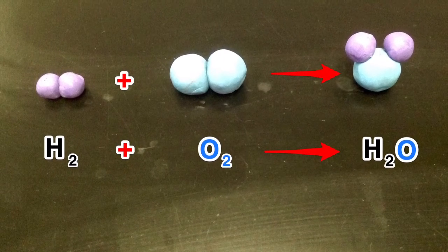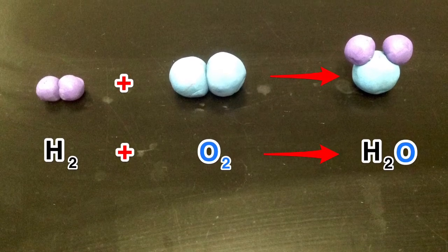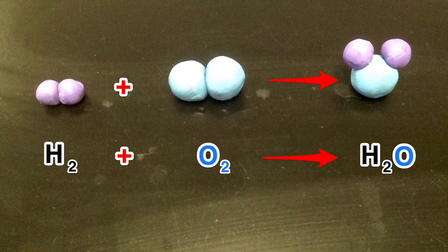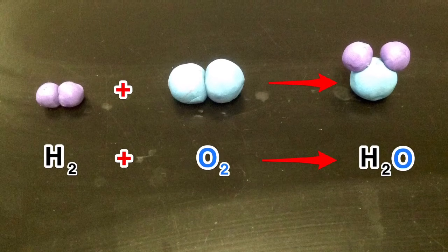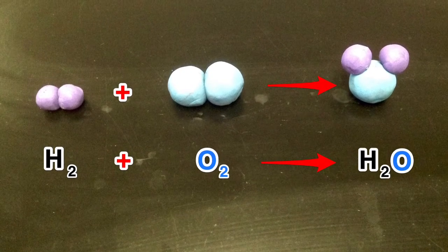As you see there are two hydrogens on the left and two hydrogens on the right, but on the left you have two oxygens and only one oxygen on the right. This is an unbalanced equation.